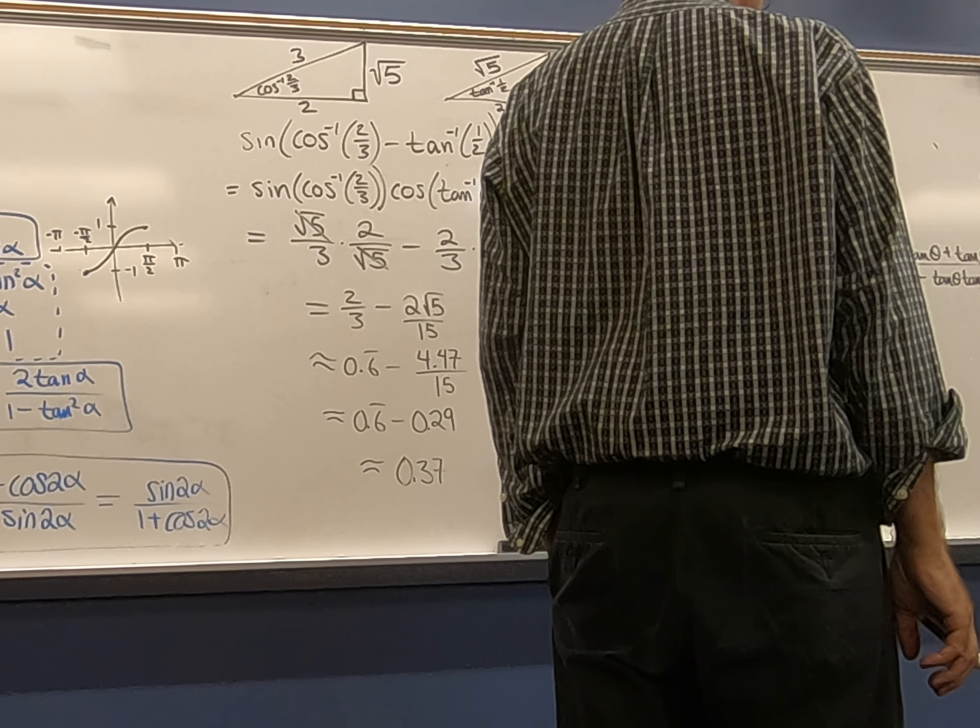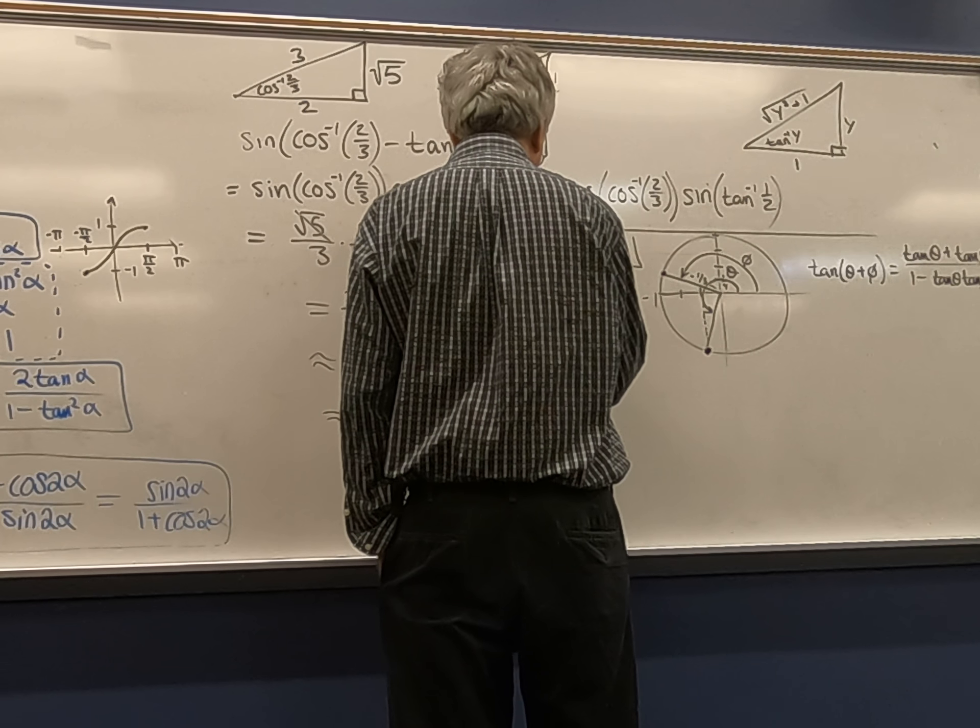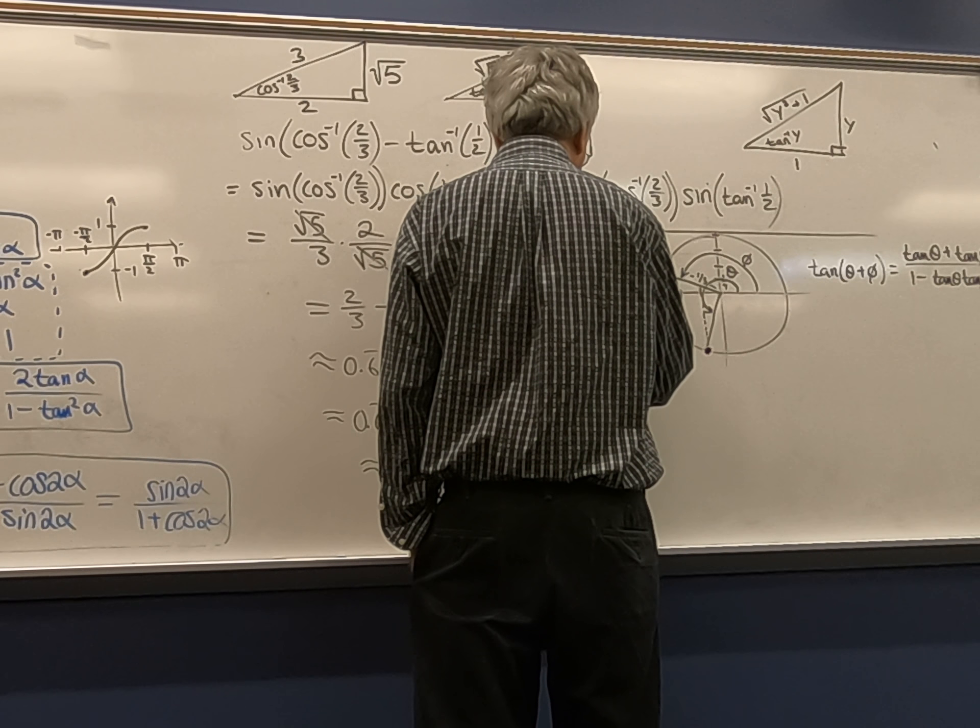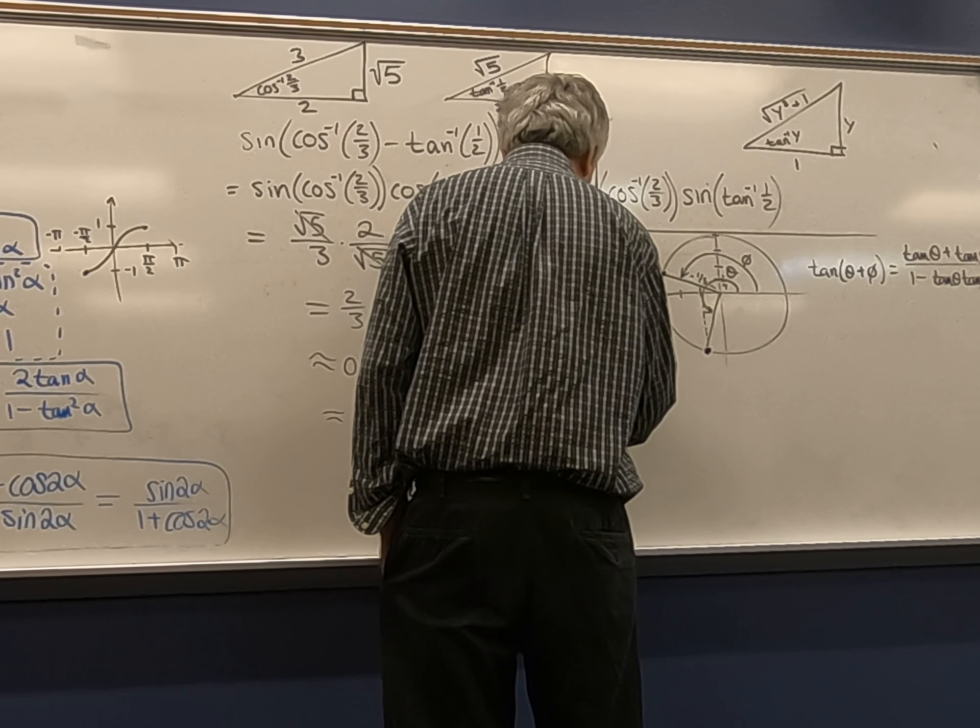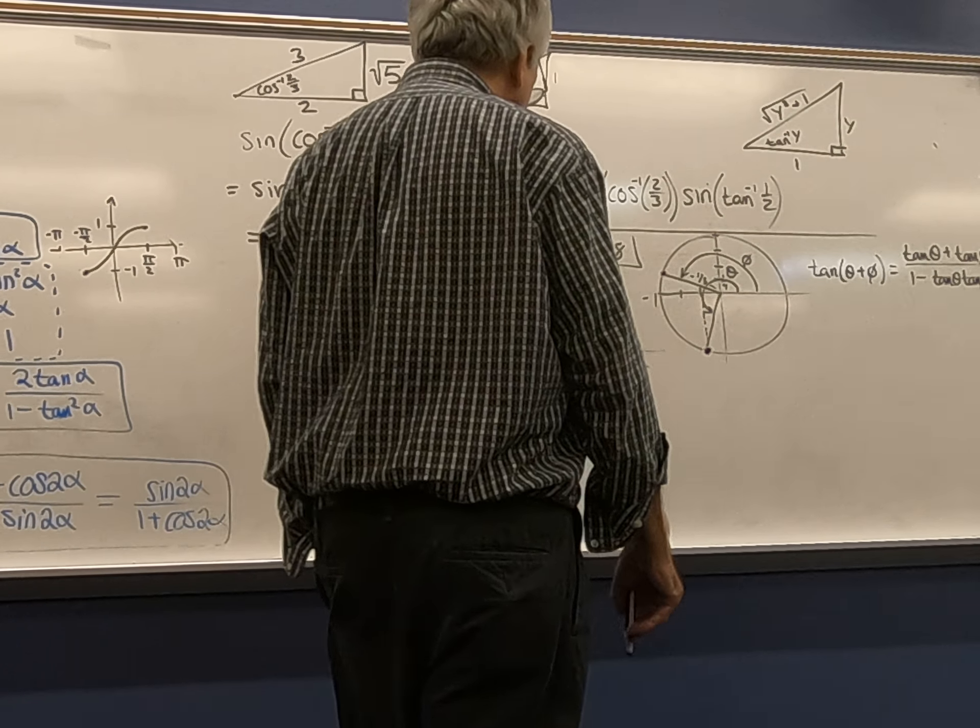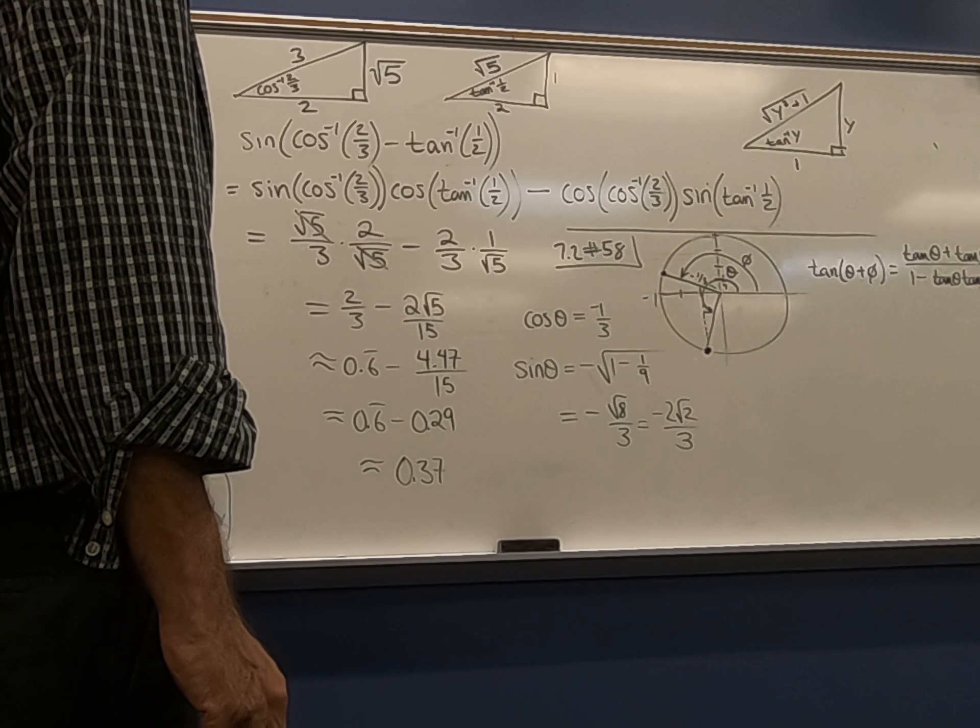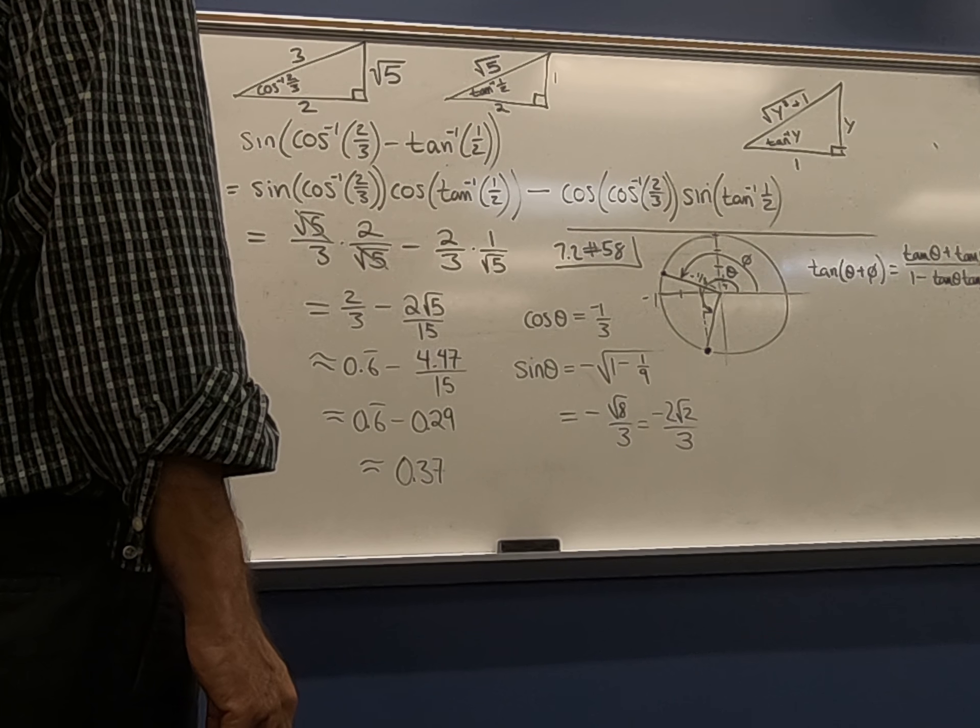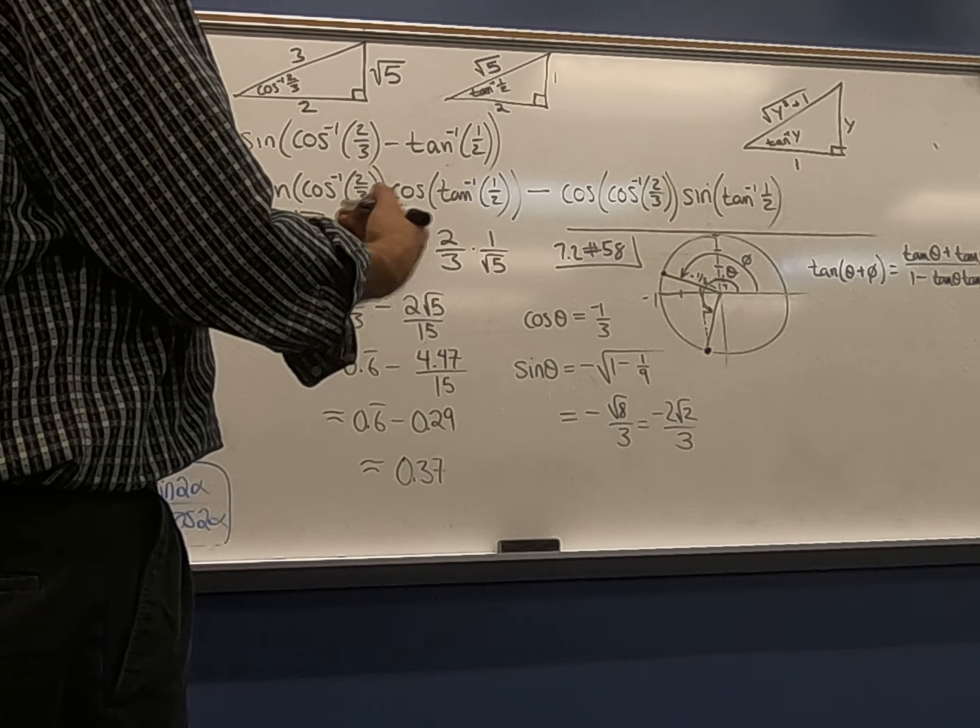And tan theta, well, that's going to be positive because we're in the third quadrant. So if cosine theta is equal to negative one-third, then sine theta, which is going to also be negative, I need to take the negative square root of one minus one-ninth. You see why that is?